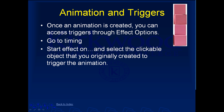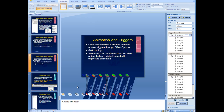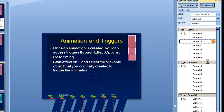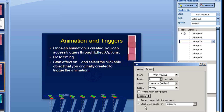The way to use triggers: once an animation is created, access triggers through Effect Options. Go to Timing — I'll jump out of PowerPoint to show you. I've got several animations; I'll click on one, go to Timing, and you'll see it's set to trigger when I click on a specific group object, like group 46. It's really just a matter of tying an animation to a trigger, which is a particular clickable object you've created.